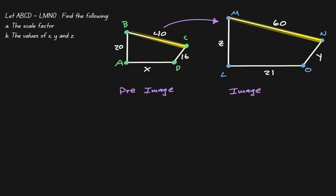From all the matchings we just did, this is the only match where we know the value of both line segments. Therefore, we will use these two line segments to define the scale factor, where MN is 60 and BC is 40, which gives us a scale factor equivalent to 1.5.